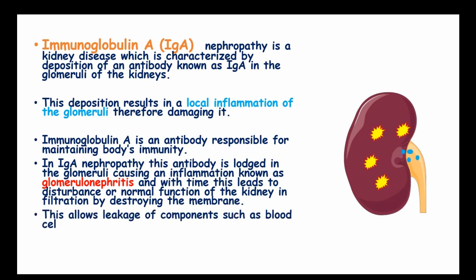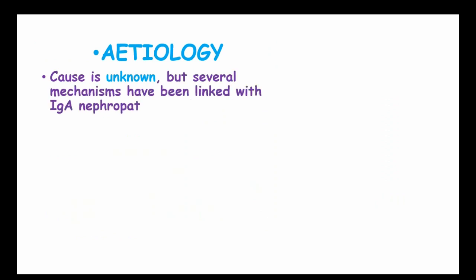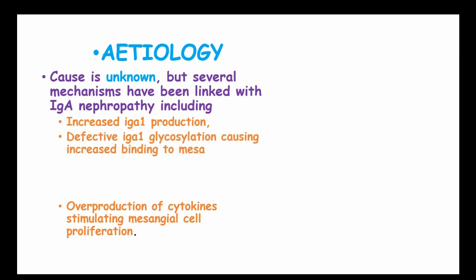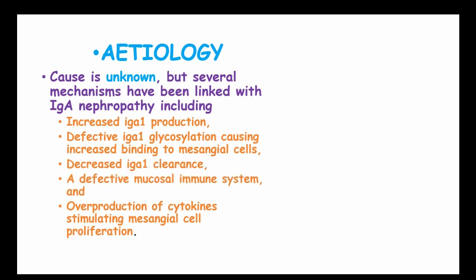This allows leakage of components such as red blood cells and proteins which normally don't get out of the body. The cause is unknown, but several mechanisms have been linked with IgA nephropathy including overproduction of cytokines stimulating the mesangial proliferation, increased IgA1 production, defective IgA1 glycosylation causing decreased binding to the mesangial cells, and decreased IgA clearance due to a defective mucosal immune system.